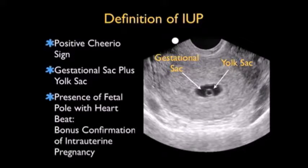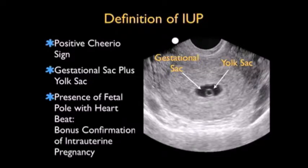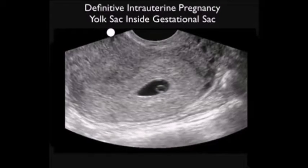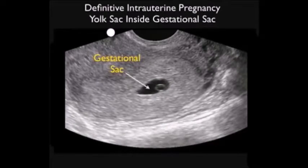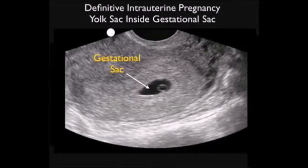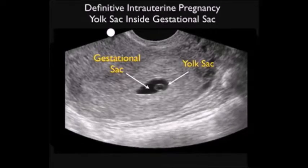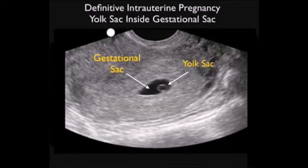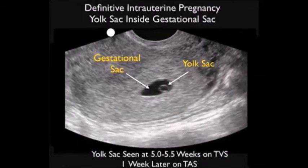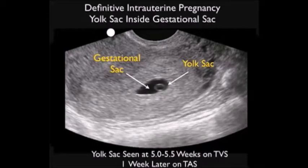The finding we define as indicative of an intrauterine pregnancy is the presence of a gestational sac with a yolk sac inside. As seen in the picture to the right, the yolk sac has a circular appearance — we call this the positive cheerio sign. Gestational sac plus yolk sac is indicative of intrauterine pregnancy. Bonus points are given if you also see a fetal pole with a heartbeat. The video clip shows a definitive intrauterine pregnancy: a larger gestational sac with the positive yolk sac or cheerio sign visible, effectively ruling out ectopic pregnancy in the vast majority of patients. The yolk sac is seen at about 5 to 5.5 weeks on transvaginal sonography and about a week later on transabdominal sonography.